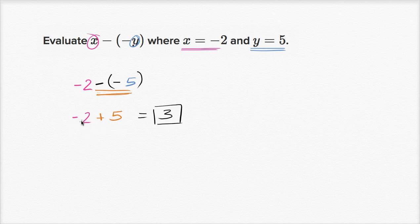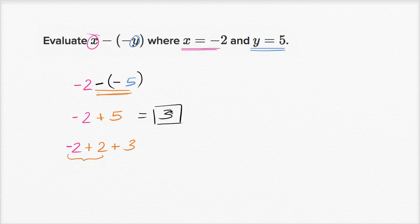There are several ways to think about this. Starting at negative two — if I add two, I get to zero, and then I have to add another three, so that gets me to three. Another way: negative two plus five is the same thing as five minus two, which is of course equal to three. Or you could draw it on a number line: if you start at negative two and take five steps to the right, you get to positive three.